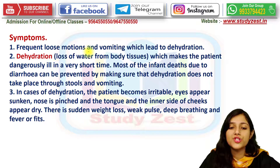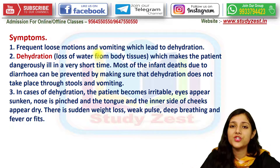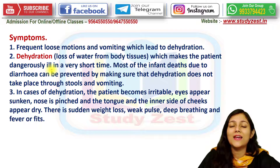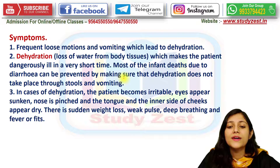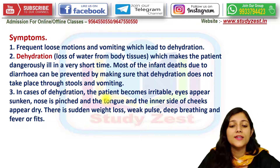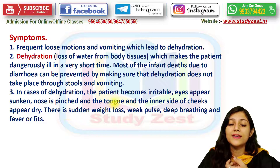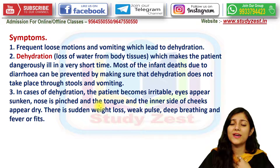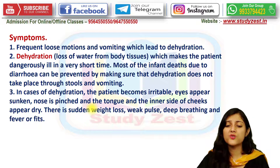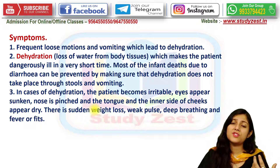Symptoms include frequent loose motions and vomiting, leading to dehydration. Dehydration makes the patient dangerously ill and very weak very quickly. Most infant deaths due to diarrhea can be prevented by ensuring dehydration does not occur. In cases of dehydration, the patient becomes irritable, eyes appear sunken, nose is pinched, and the tongue and inner cheeks appear very dry. Sudden weight loss, weak pulse, deep breathing, and fever are also seen.